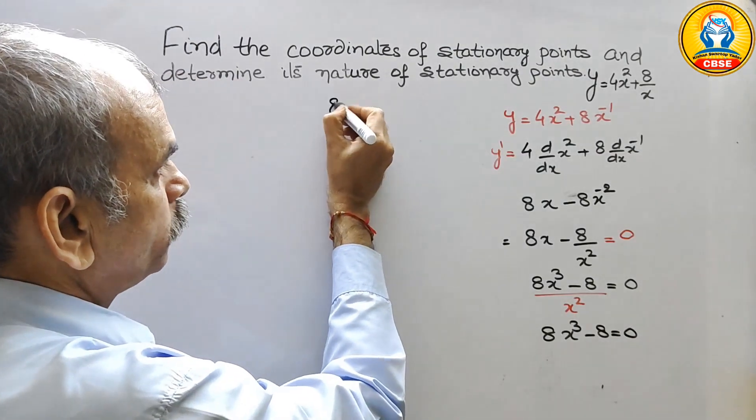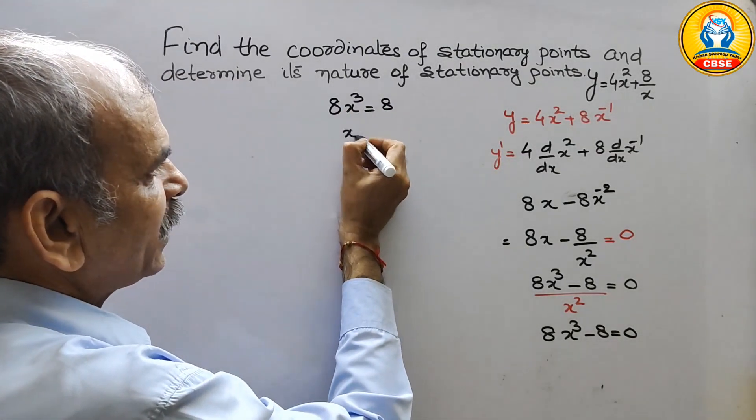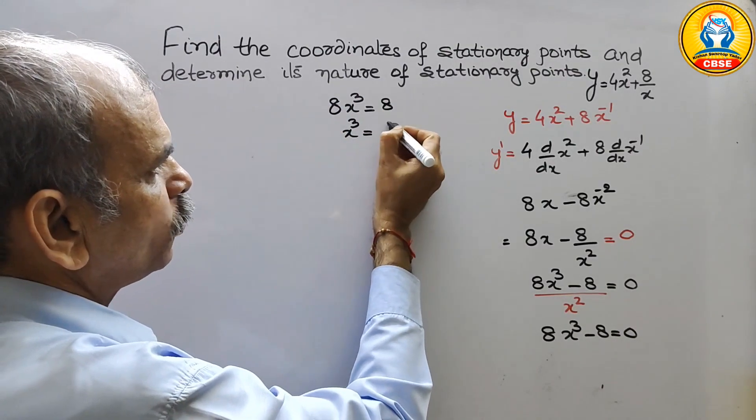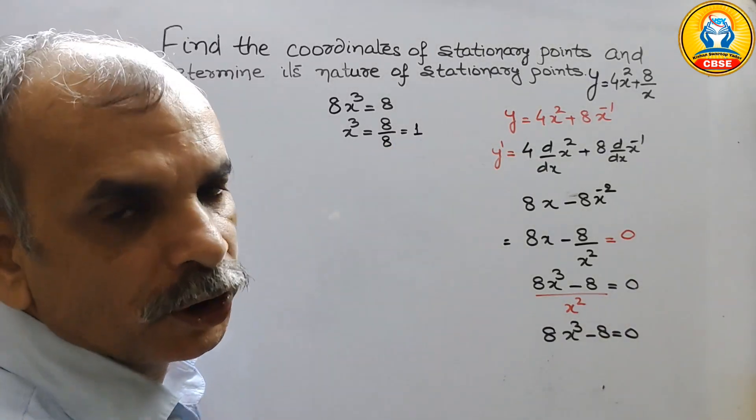So now 8x cube is equal to 8. So we can say x cube is equal to 8 by 8 that is equal to 1. So it is positive.